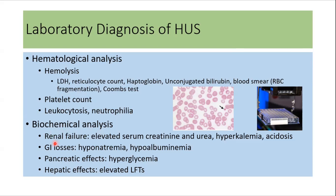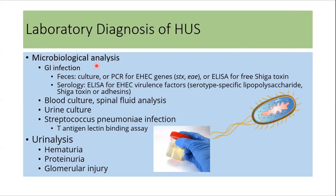Biochemical analysis is done to look for features of renal failure. Serum creatinine and urea are usually elevated. The patient can present with hyperkalemia and acidosis. Hyponatremia and hypoalbuminemia may suggest GI loss. Hyperglycemia suggests pancreatic involvement, and elevated LFTs suggest hepatic involvement. Microbiological analysis is done to identify bacteria if EHEC-associated HUS is suspected — feces can be tested for the EHEC gene or Shiga toxin, and serology can be done for EHEC virulence factors. Blood culture, CSF analysis, and urine culture can also be done. If Streptococcus pneumoniae infection is suspected, Thomsen-Friedenreich antigen testing can be done.